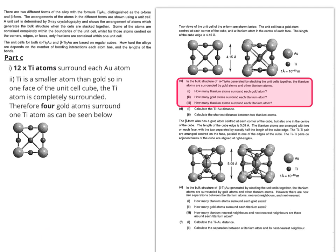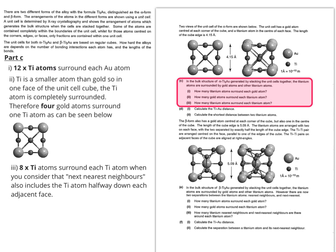It asks how many gold atoms surround each titanium atom. To do this, we need to consider the left-hand diagram. You can see quite clearly that the titanium atom is smaller than gold. Therefore, 4 gold atoms will completely surround each titanium atom. You only need to consider 1 face rather than 2 unit cells. If you take into account the 4 titanium atoms in the same face, plus also the 4 adjacent faces where there's a titanium atom halfway down, that's also going to be included as the next nearest neighbours. So that makes 8 titanium atoms.